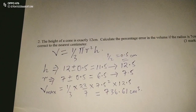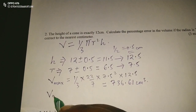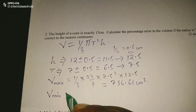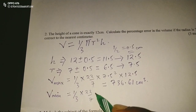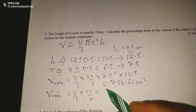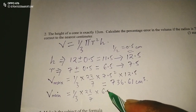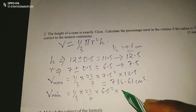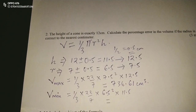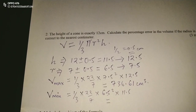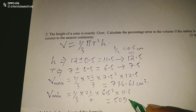For the minimum volume, we compute one-third × pi × 6.5 squared × 11.5. This gives us 509.01 cubic centimeters.